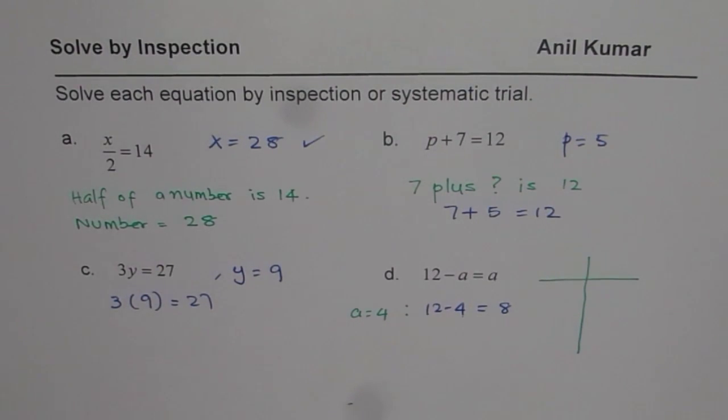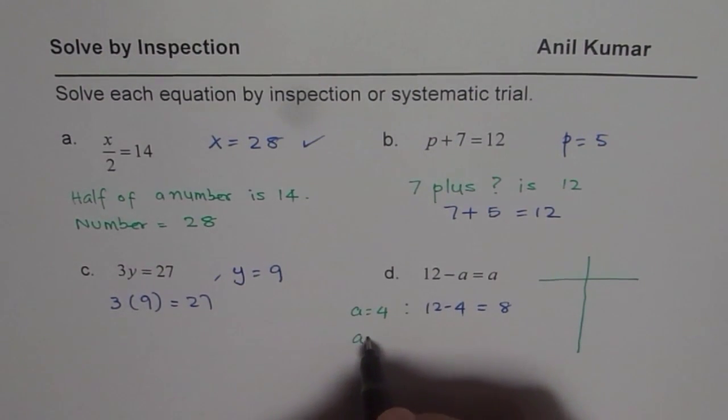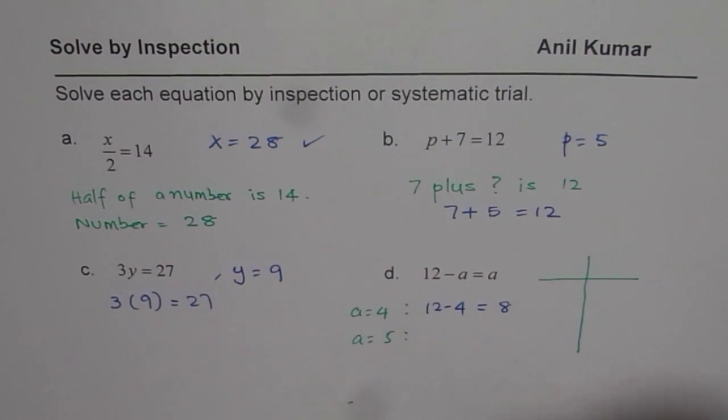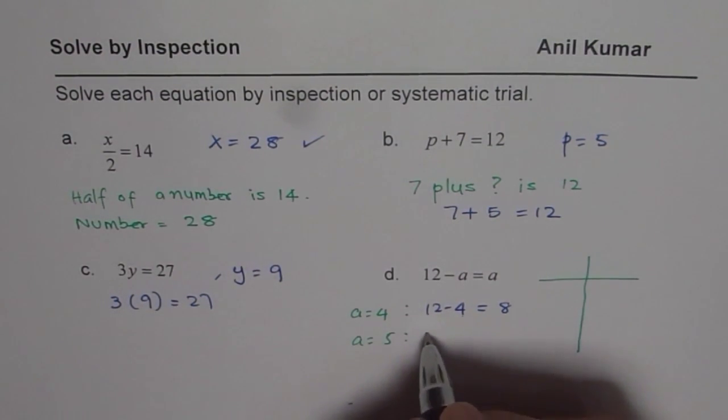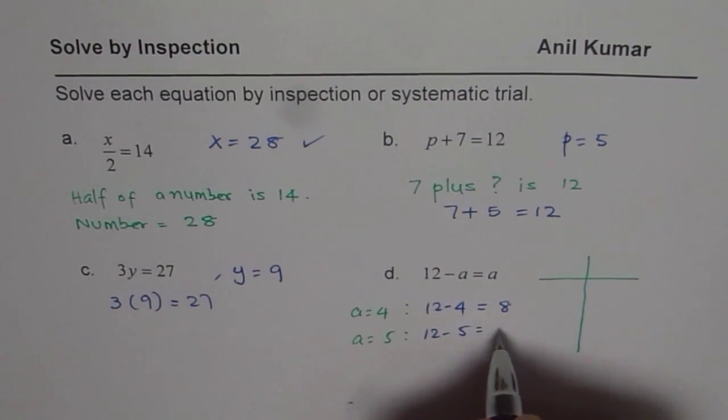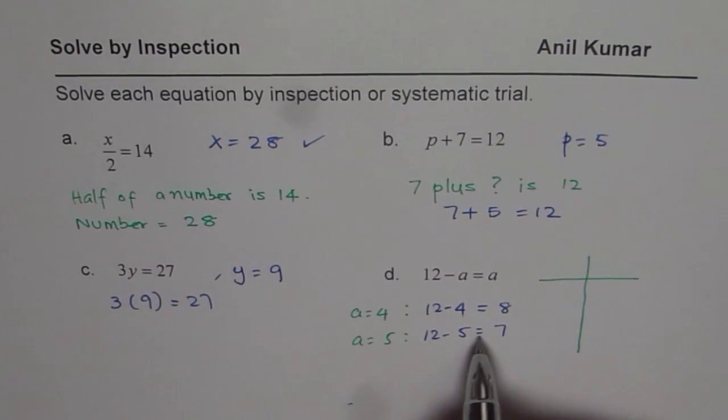So we can likewise try other values. We can say a equals, let us say, 5. If a is 5, then what? 12 minus 5 is 7. So we find that it is closer.